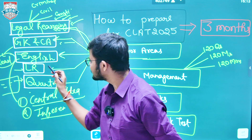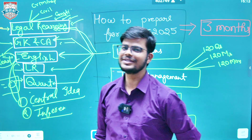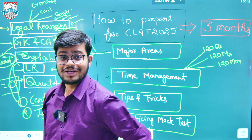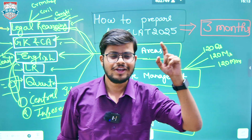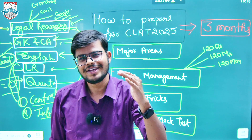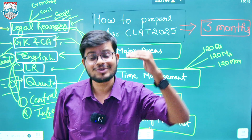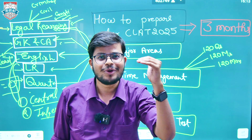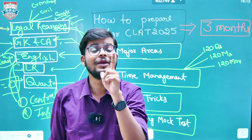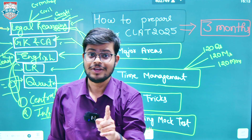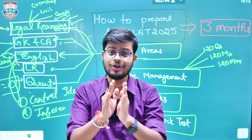After legal reasoning, GK and current affairs, and English, logical reasoning and quantitative aptitude come next. A mistake many students make every year is ignoring these sections. But in this competitive examination, with Indian population and competition increasing day by day, the competition is going to be neck-to-neck. You cannot afford skipping any subjects. You need to pay equal attention to quantitative aptitude as well as logical reasoning.